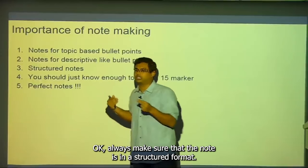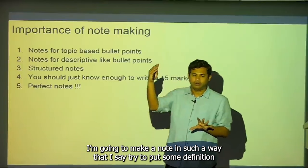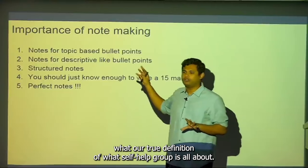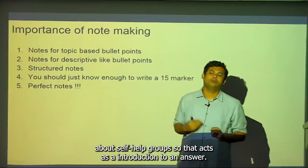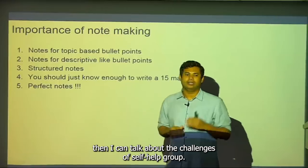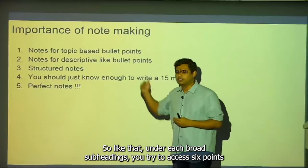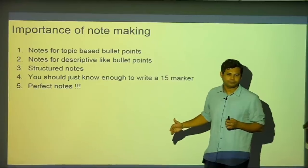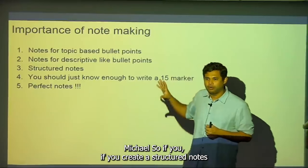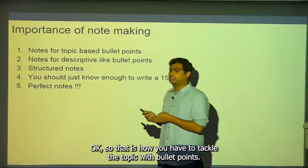Always make notes in a structured format. For self-help groups, start with one or two definitions or factual information as an introduction. Then cover different dimensions: positives of self-help groups, challenges, government initiatives, and success stories. Under each broad subheading, add five to six points. Aim for around 250 to 300 words — that is enough content for a 15-marker on a topic.